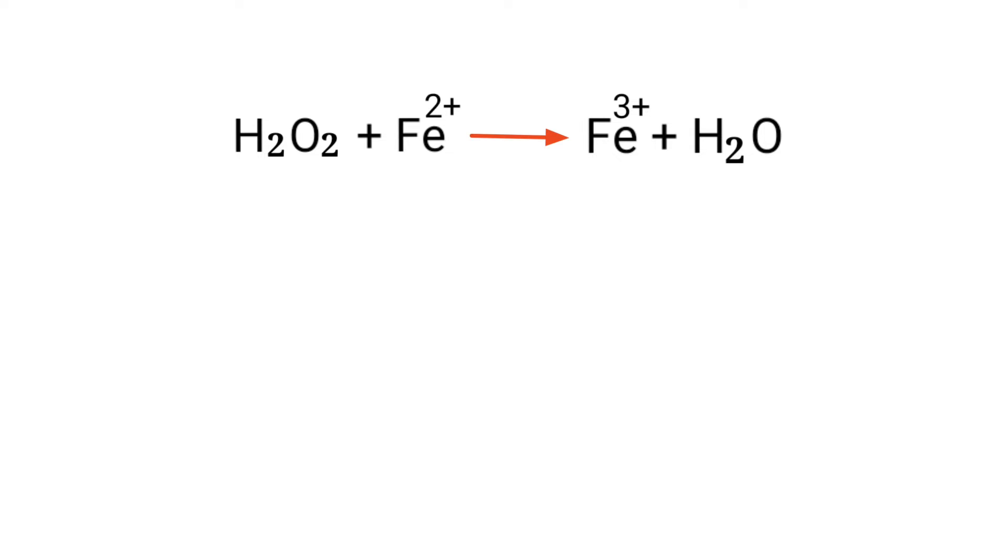Figure the reducing and oxidizing agents by the rules of assigning oxidation numbers. In ion electron method, one reaction is divided into two reactions and then they are balanced and then added together.